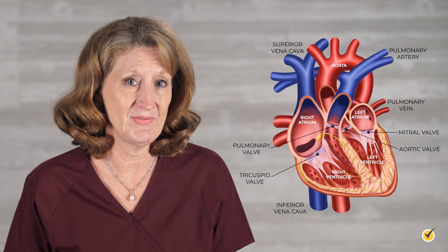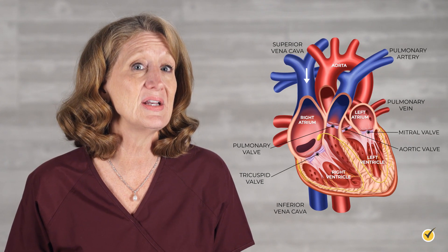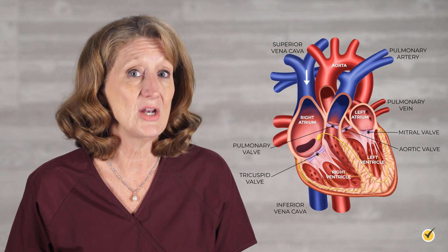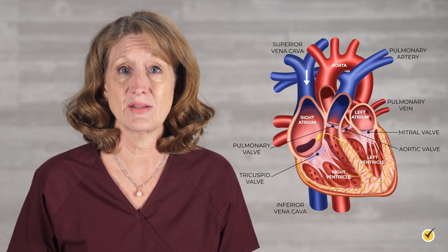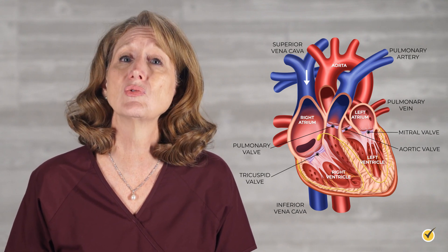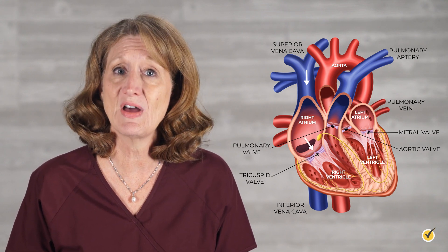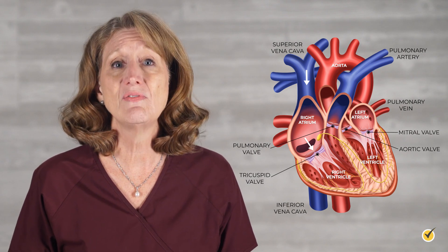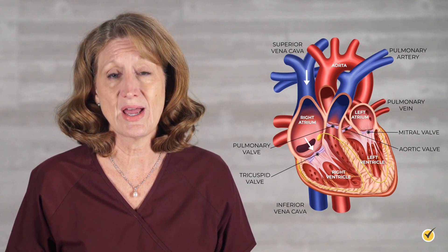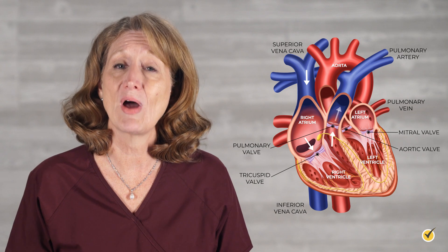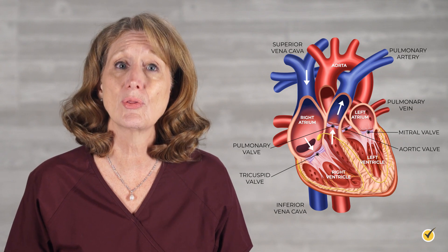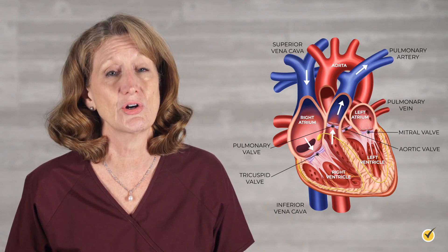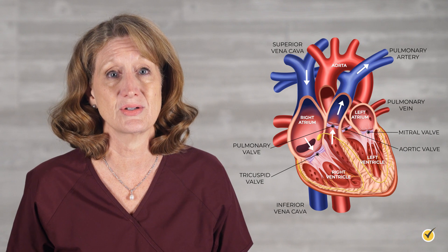The superior vena cava brings blood into the right atrium, and when the atria contract, the blood flows through the tricuspid valve into the right ventricle. When the ventricles contract, the blood flows from the right ventricle through the pulmonary valve and into the pulmonary artery to the lungs.